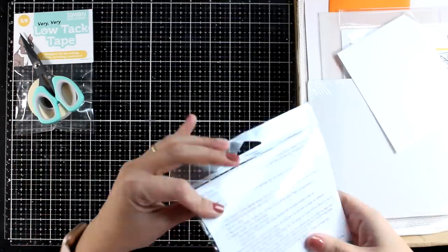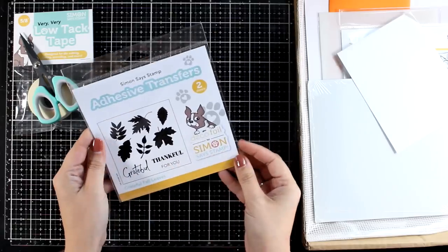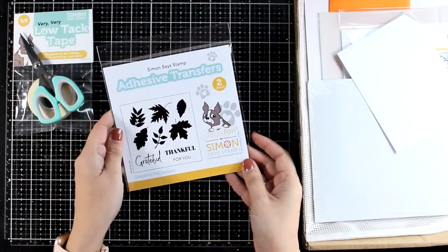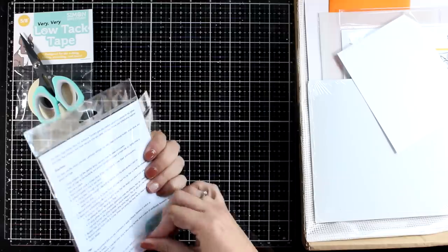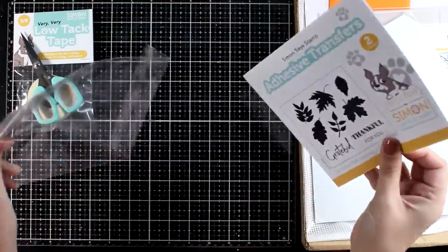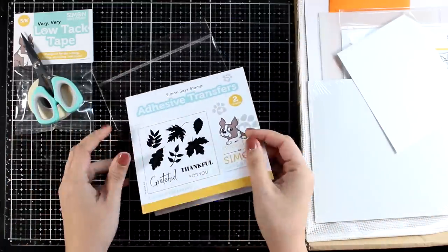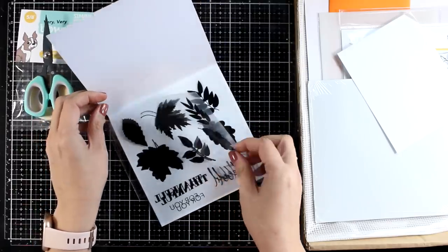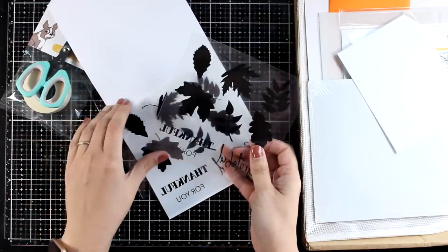And you do get a low tack tape, always handy to have. So this is the new product to me - these are the adhesive transfers and they are meant to be used for foiling. These are the ones that I will be playing with today.